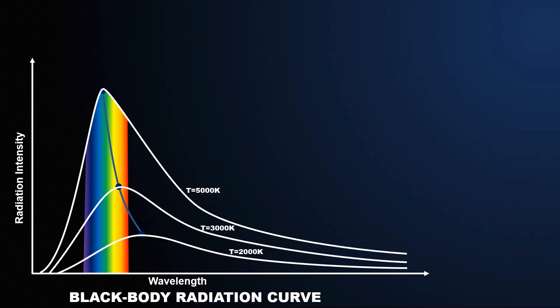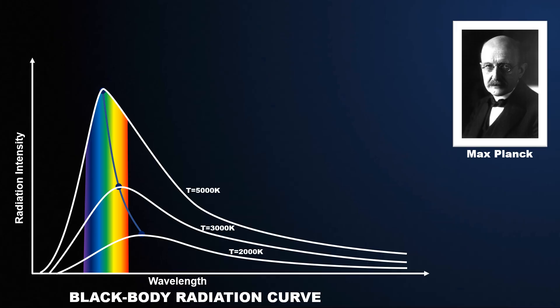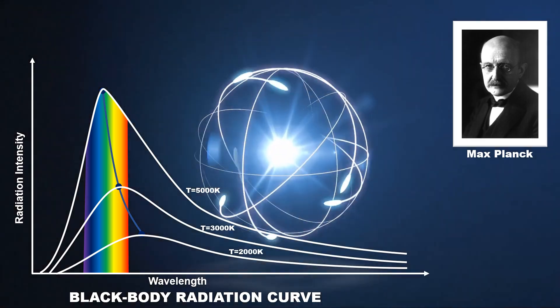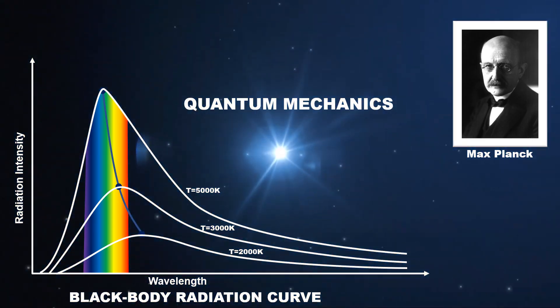This was done by German theoretical physicist Max Planck. Not only did he successfully explain the black body radiation curve, but he also laid the foundation for modern physics, which is today known as quantum mechanics. In this video of quantum mechanics, we will learn about Planck Radiation Law.